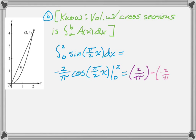Minus, when I plug in 0, I end up with the cosine of 0, which is 1. So, 1 times negative 2 over pi, which is negative 2 over pi. So, 2 over pi minus negative 2 over pi is 4 over pi, and that's my answer to that.